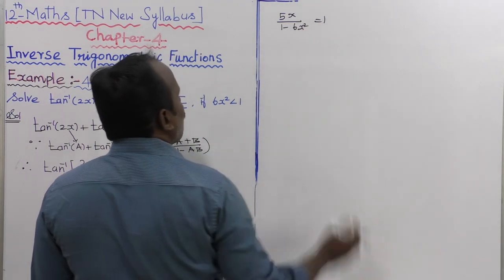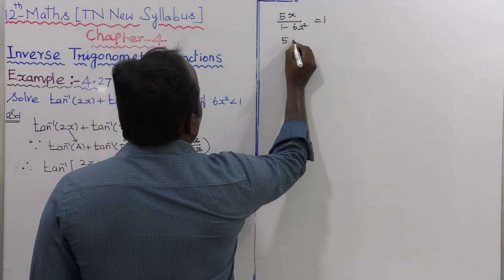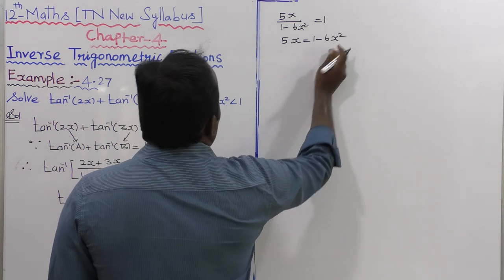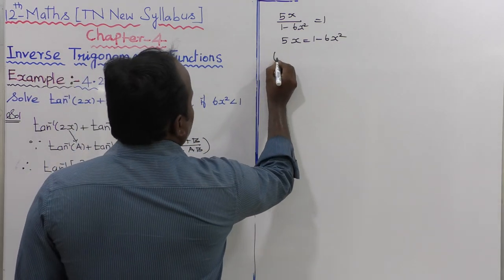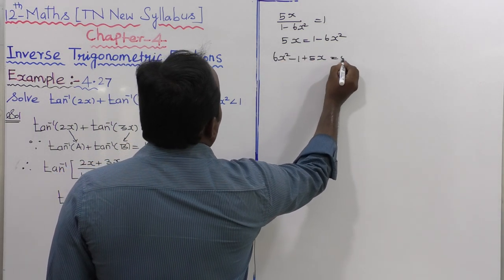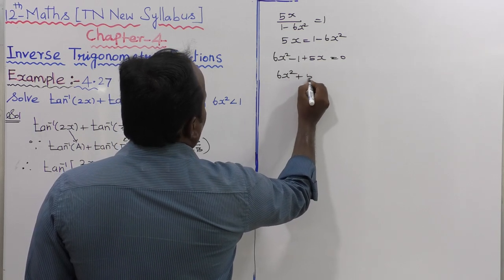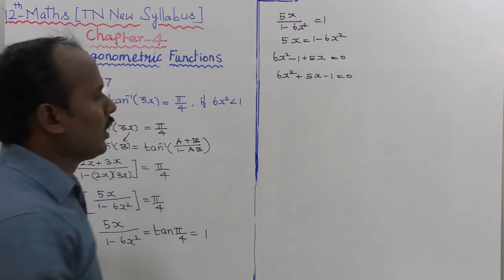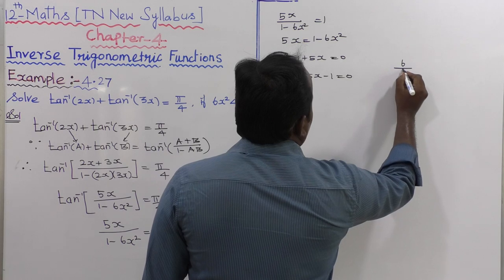So 5x divided by (1 minus 6x squared) equals 1. Cross-multiplying: 5x equals 1 minus 6x squared. Rearranging: 6x squared plus 5x minus 1 equals 0. Now solve this quadratic equation — multiplication gives minus 6 and addition gives 5.